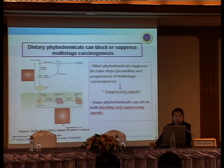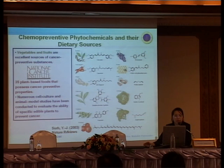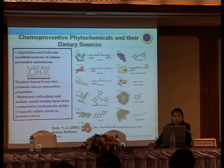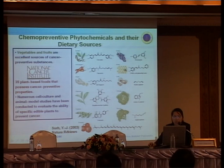These are chemo-preventive phytochemicals, and there are three sources. Fruits and vegetables are excellent sources of cancer-preventive substances. The National Cancer Institute identifies 35 plant-based foods that possess cancer-preventive properties, including turmeric, chili pepper, ginger, green tea, soybean, tomatoes, grapes, honey, garlic, and cruciferous groups such as cabbage and broccoli. The active compound showing chemo-preventive effect has been identified from each type of plant.